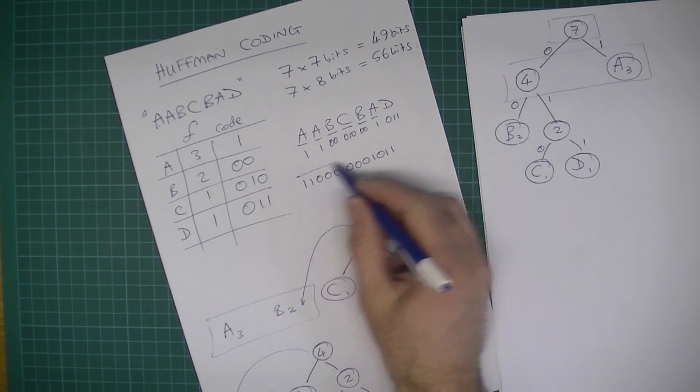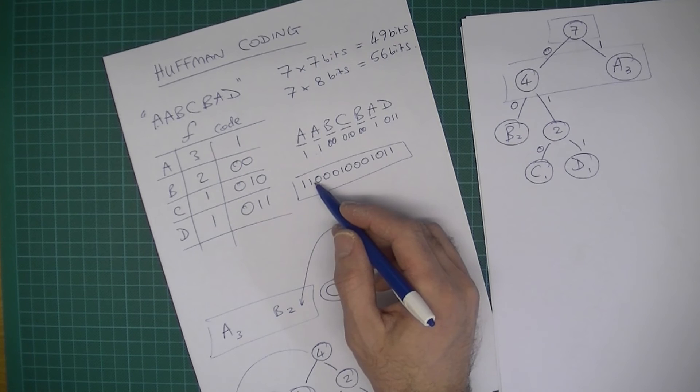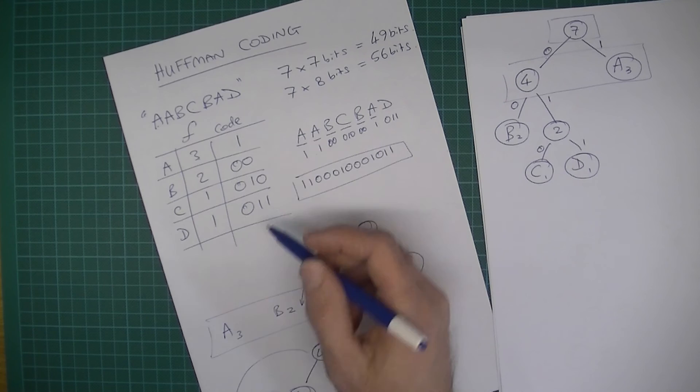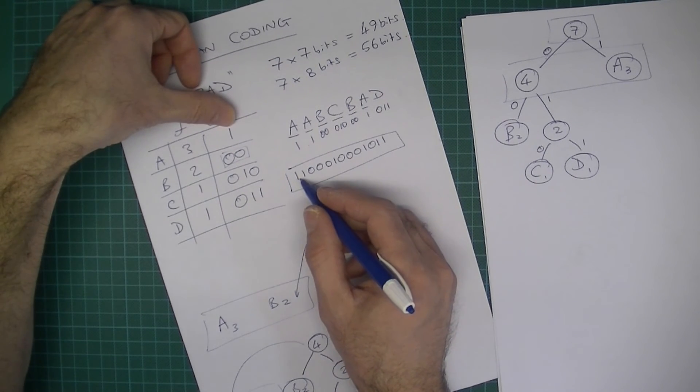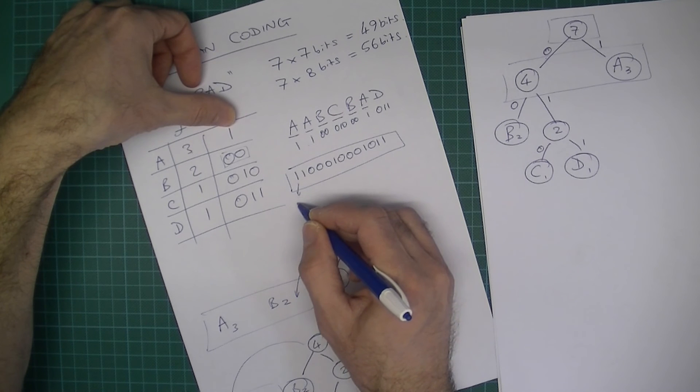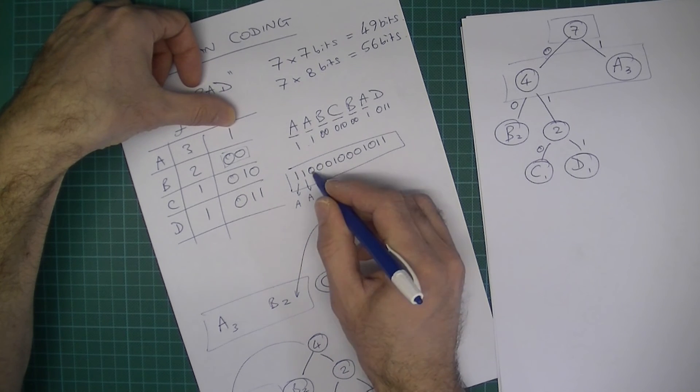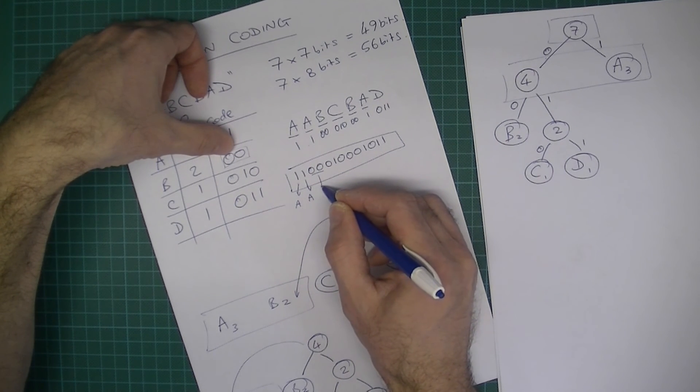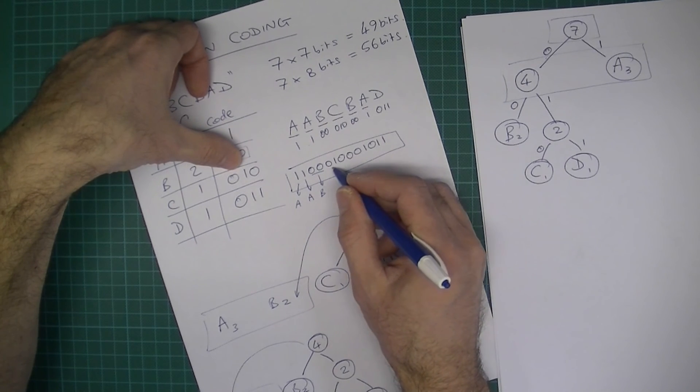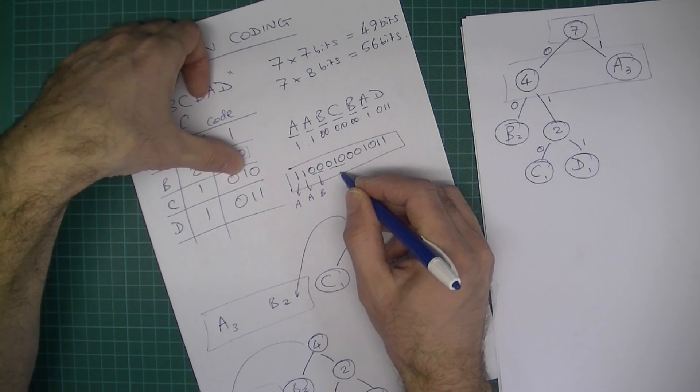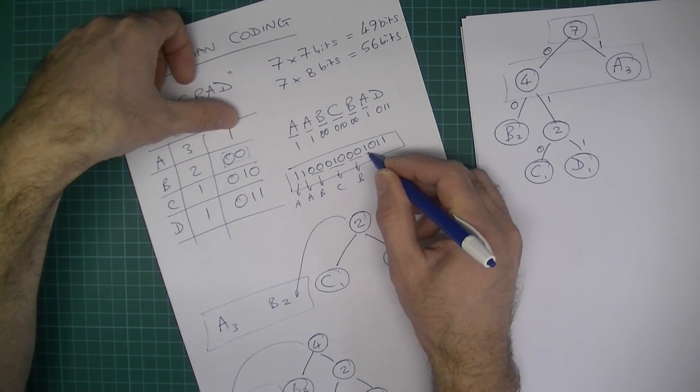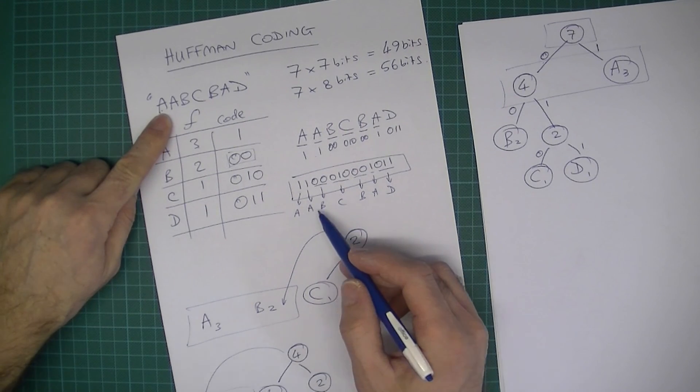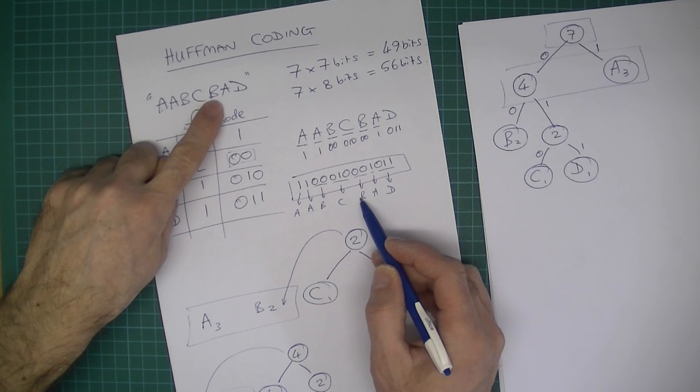You might be thinking, well how on earth could you then decode that to work out what the original text was? Well, it's easy. So 1, 1 is going to be A. 1, 1 is still A, and then we've got 00, so 00 is B, and then 010 is C, which is exactly what we started off with originally: AABCBAD.